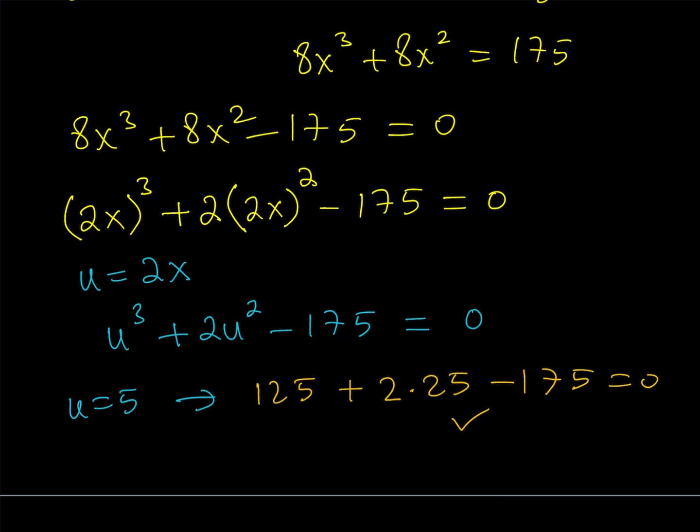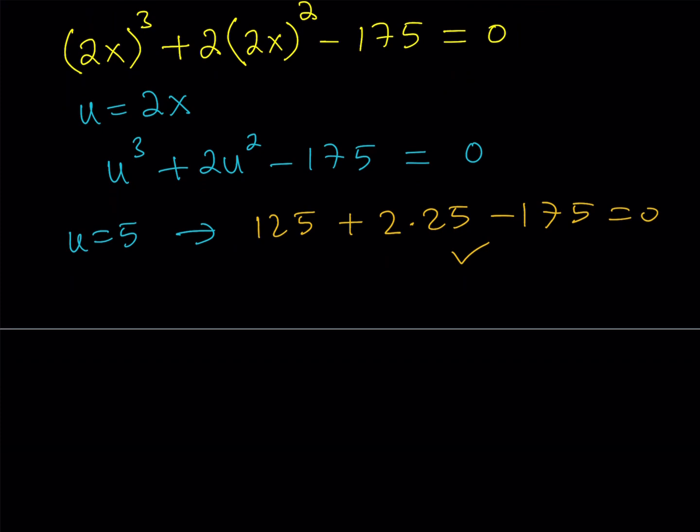But not only that, this is a cubic equation, so there might be other solutions. But what happens is, if you go ahead and take this and then just divide whatever method you want, polynomial division or otherwise, divide this by u minus 5, and you'll get a quadratic, but that quadratic equation will not have real roots. So we're getting two complex roots, which we don't care about because we're looking for real solutions because we're dealing with floor and ceiling values.